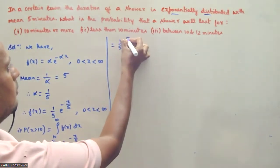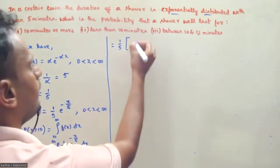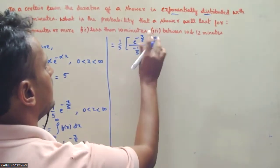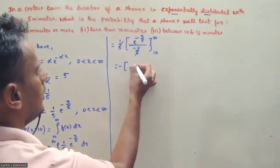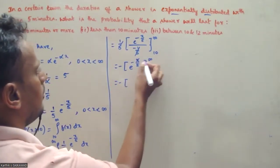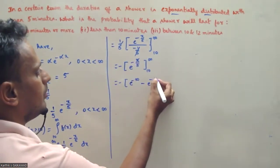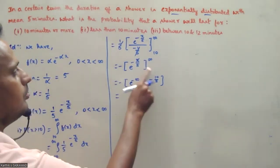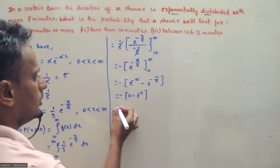Taking (1/5) as constant, the integral of e^(-x/5) is e^(-x/5) divided by (-1/5). Applying the limits from 10 to infinity: upper limit gives e^(-infinity) = 0, lower limit gives e^(-10/5) = e^(-2).